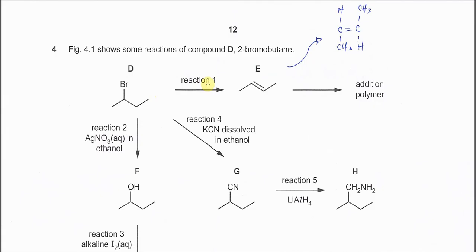Reaction 1, so we know that it forms the carbon-carbon double bond, which means it undergoes elimination. The bromine will be removed and one of the H here will be removed to form this carbon-carbon double bond, which means compound E.